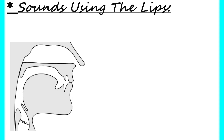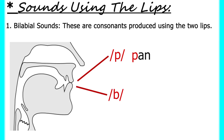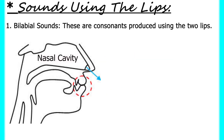Consonants produced using the two lips are called bilabial sounds, as in 'p' in pan and 'b' in ban. In the production of 'p' and 'b,' air comes out through the mouth — they are oral sounds. You notice that your lips are involved when producing the sounds 'p' and 'b,' which is why they are called bilabial sounds.